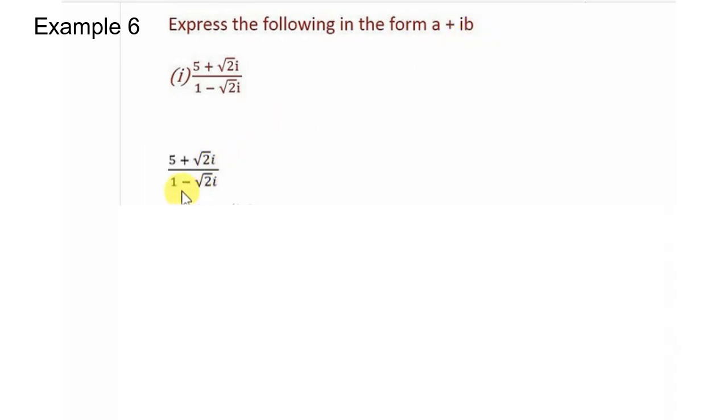The expression is (5 plus root 2i) over (1 minus root 2i). As we know, we cannot have the root terms and we cannot have i, the imaginary i, in the denominator. In order to remove root and i from the denominator, we need to rationalize this.